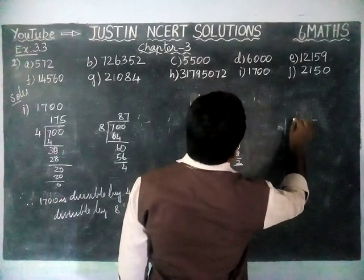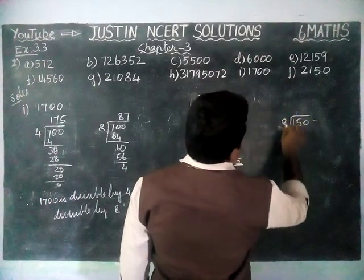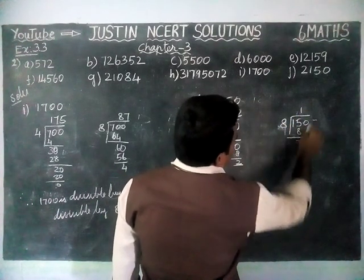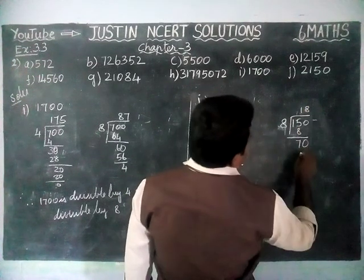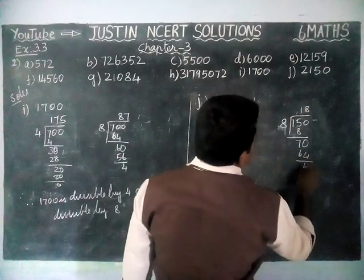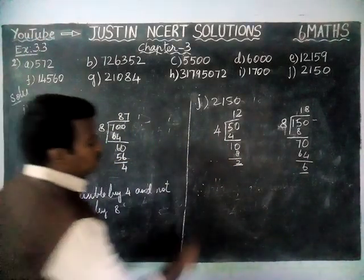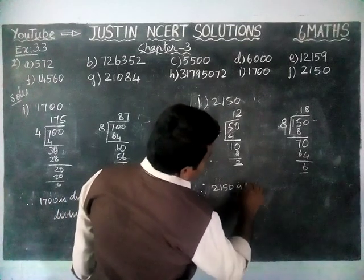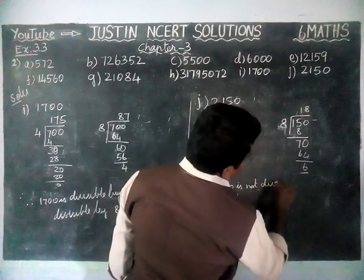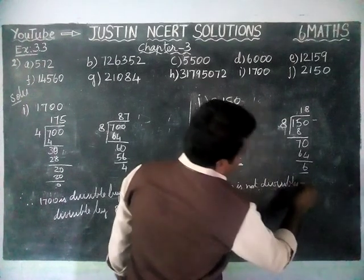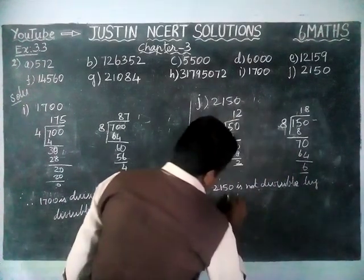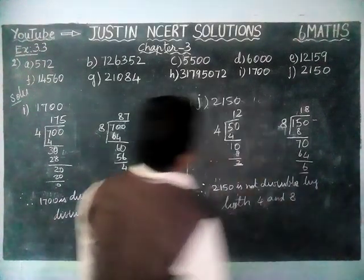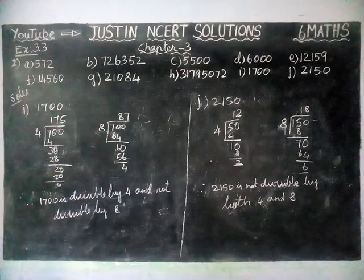Next, we take the last 3 digits, which are 150, and check for divisibility by 8. In 15, we have only 1 eight, remaining 7, giving 70. 8 eights are 64, remaining 6. Since a remainder is coming, 2150 is not divisible by both 4 and 8.